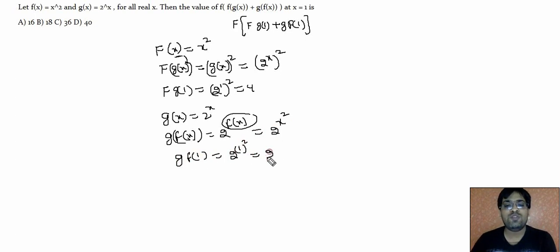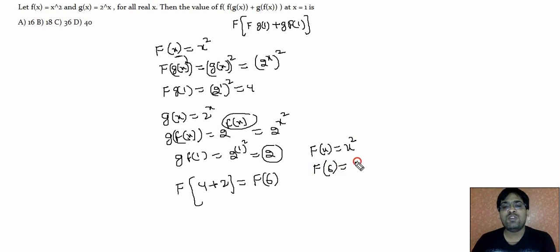So basically, f(g(1)) which is 4, g(f(1)) which is 2. So we want to find value of f(6). We have f(x) which is x square, and we want to find value of f(6), which will be equal to 6 square, 36, which will be your answer.